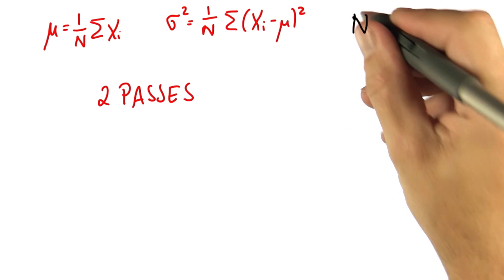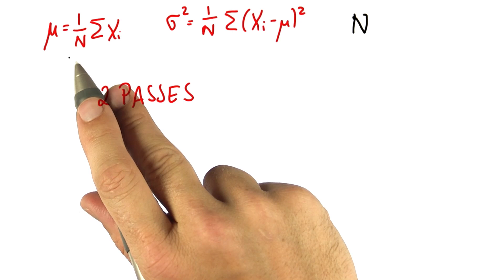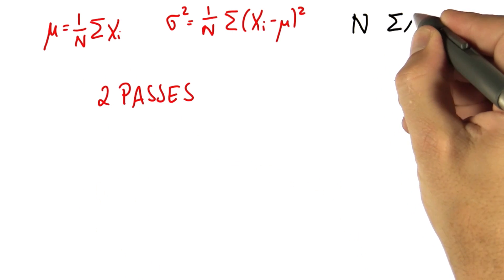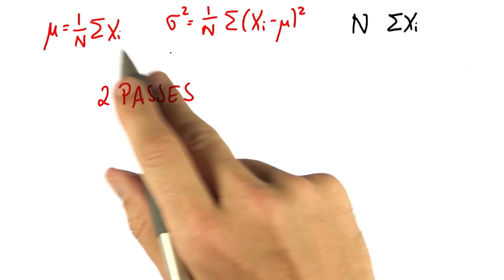For that, I maintain two things. I maintain the total number of data items, which I increment every time I see a new data item, and I maintain the sum of all xi's, which I can easily add up as I go through the data.